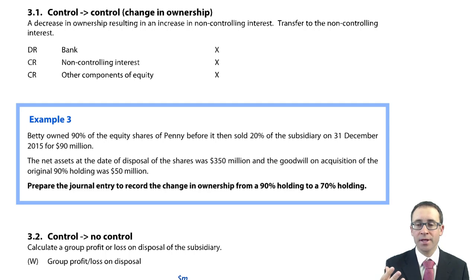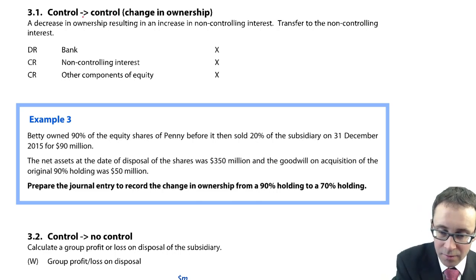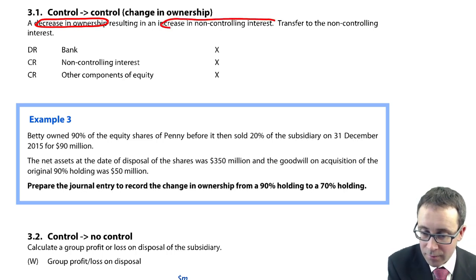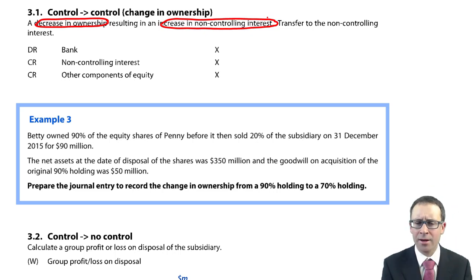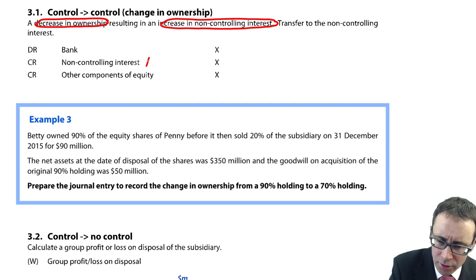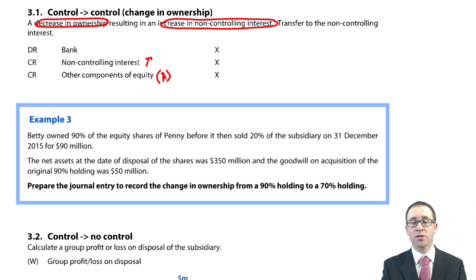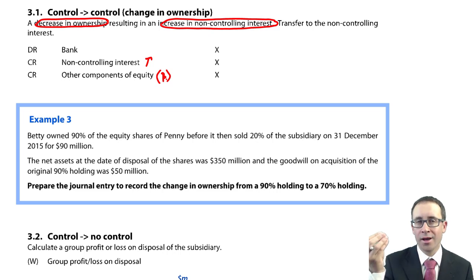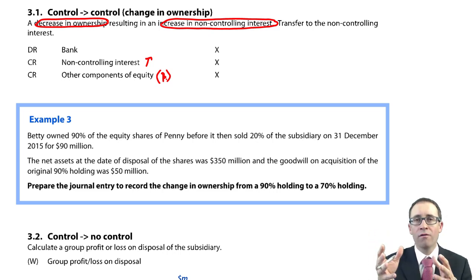So again what we've got is a change in ownership. And what happens there is that if we sell shares our ownership interest decreases. And if there's a decrease in the ownership there is then an increase in the non-controlling interest. We receive cash so we debit the bank, we credit the NCI and then the balancing figure there is your other components of equity. But the key difference here is that if you're increasing the non-controlling interest you're not giving them more of the already owned non-controlling interests. You're giving them more of the assets, more of the liabilities and more of the goodwill.